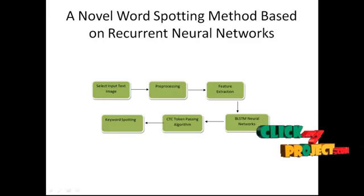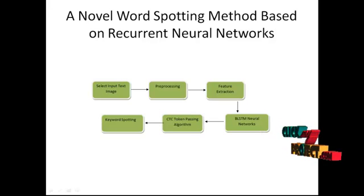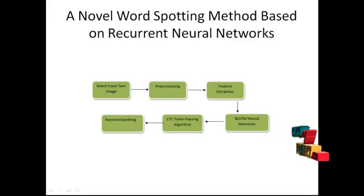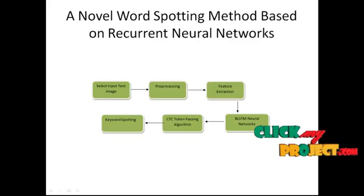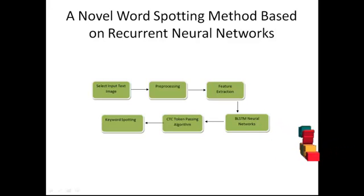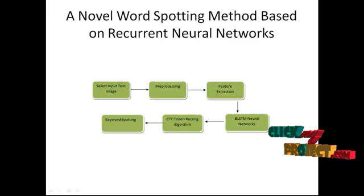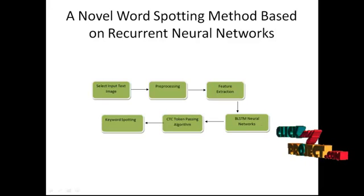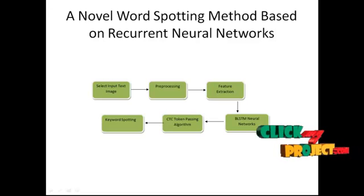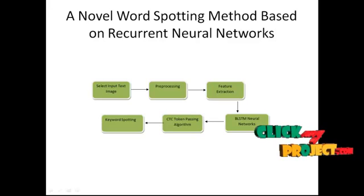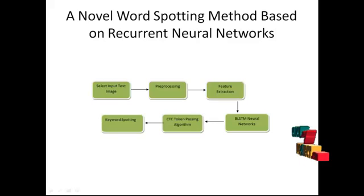A feature vector is formed based on the following information. Every zone has a feature vector corresponding to it. The contents of each zone feature vector are: number of horizontal lines, number of vertical lines, number of right diagonal lines, number of left diagonal lines, normalized length of all horizontal lines, normalized length of all vertical lines, normalized length of all right diagonal lines, normalized length of all left diagonal lines, and normalized area of the skeleton.